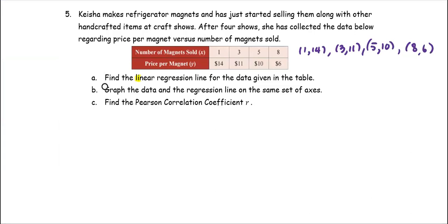The number of magnets sold is the X, price per magnet is the Y, in a table. We can form the set of ordered pairs as (1,14), (3,11), (5,10), and (8,6). In part A, we're going to find the linear regression line for the given data in the table. In part B, we're going to graph the data and the regression line on the same graph. And part C, we're going to find the Pearson correlation coefficient r.